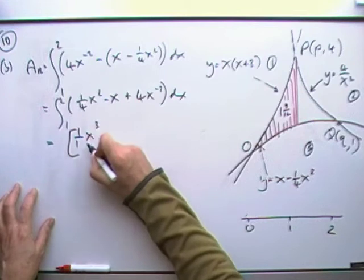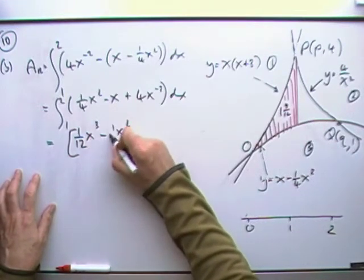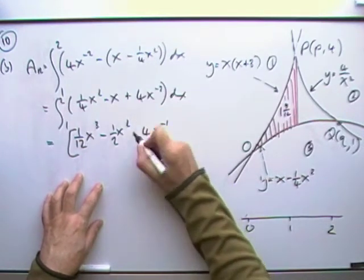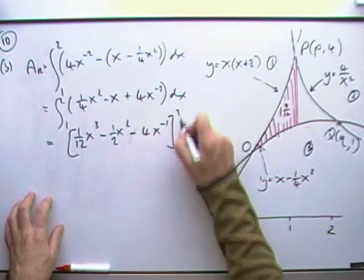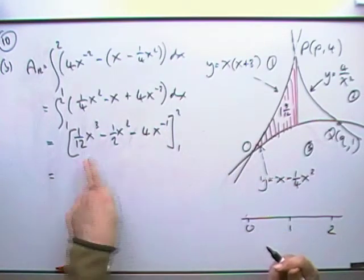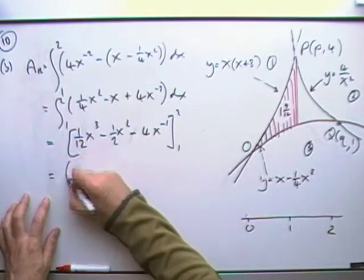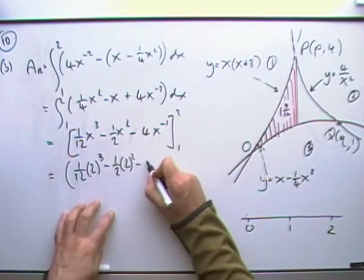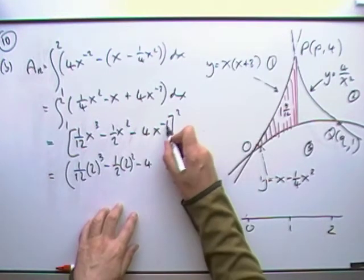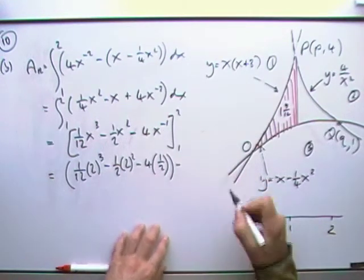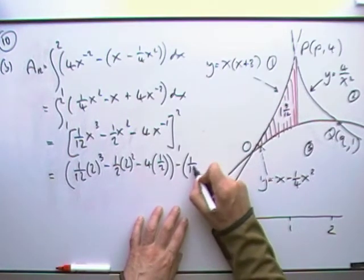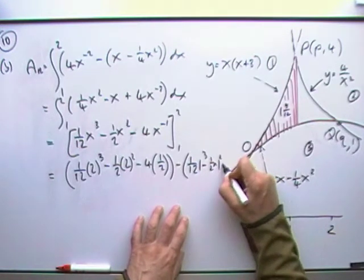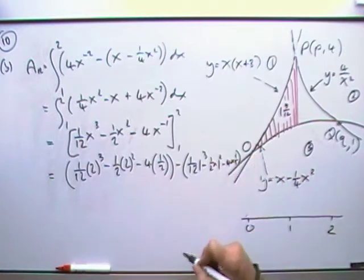So just tidying that up, I've got a quarter of x squared minus x, plus 4x to the negative 2 dx. It's all ready to go now. So up to 3, divide by 3, so that'll be a 12, up to 2, divide by 2, up to negative 1, divide by negative 1, so I'll make that a minus 4. Work it out at 1, work it out at 2. At least working out at 1 is not bad, because 1 to the power of anything is just 1. So working it out at 2, I've got 1/12th of 2 cubed minus a half of 2 squared minus 4 times, now negative 1 means 1 over 2. Take away a 12th of 1 cubed minus 4 times 1 over 1.